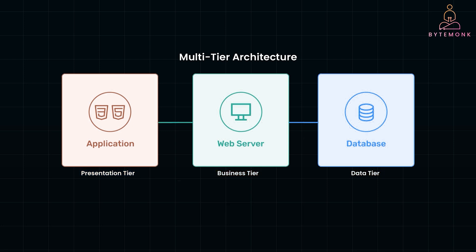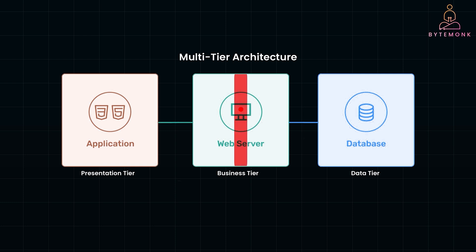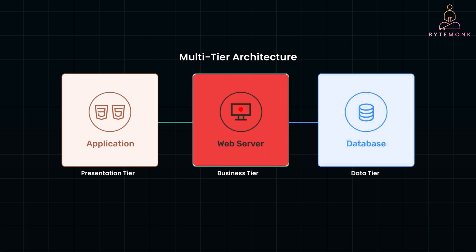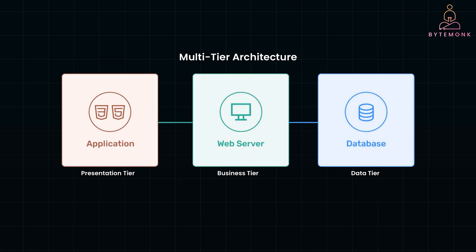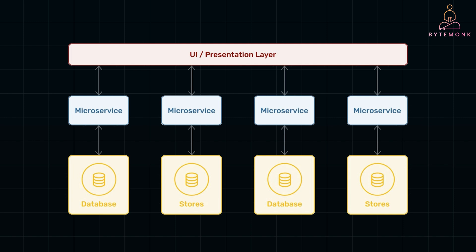As applications like Amazon and Google grew rapidly, maintaining and scaling these large systems became more difficult. Changes to one part of the system could easily impact everything else, and adding new features slowed down development. To tackle this complexity, engineers had to rethink the architecture entirely. The solution? Microservices.